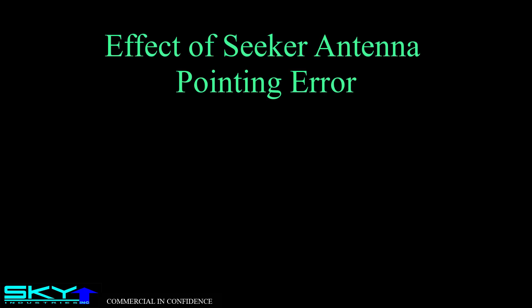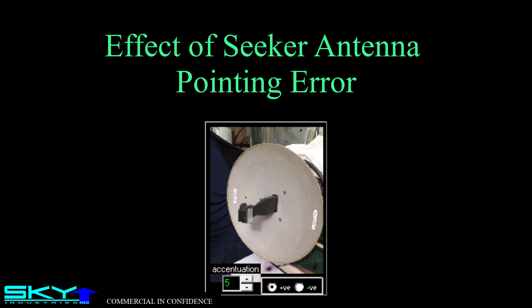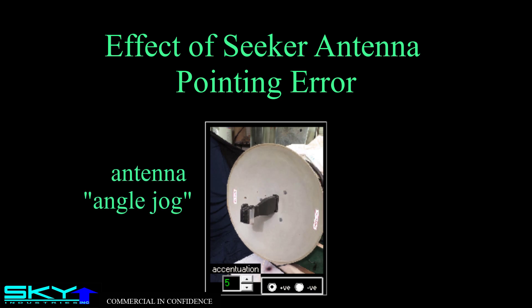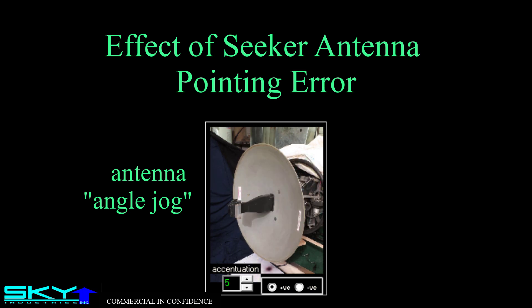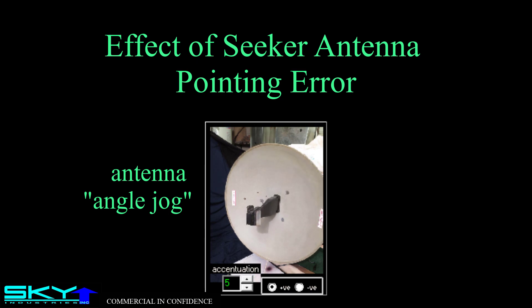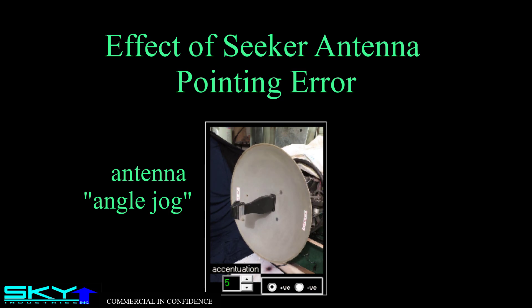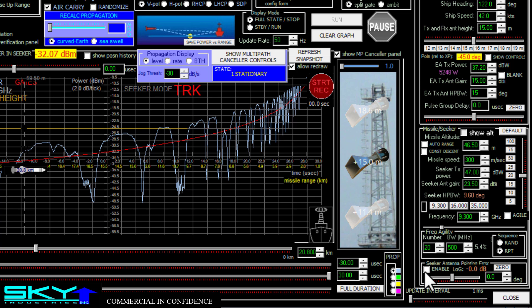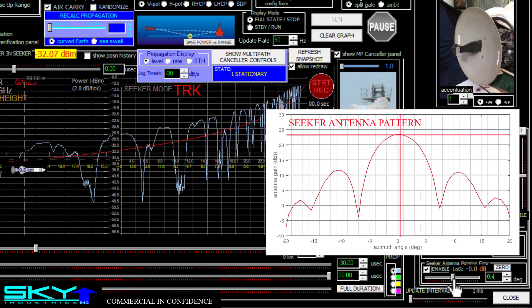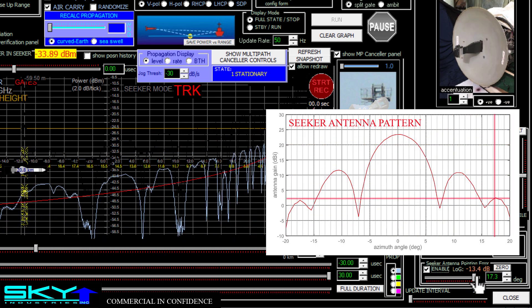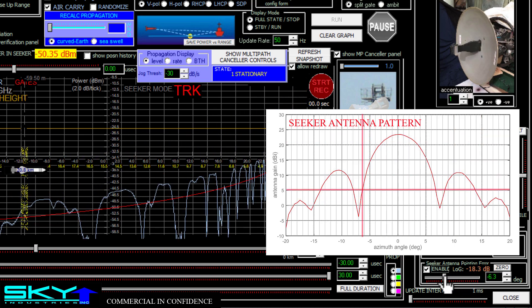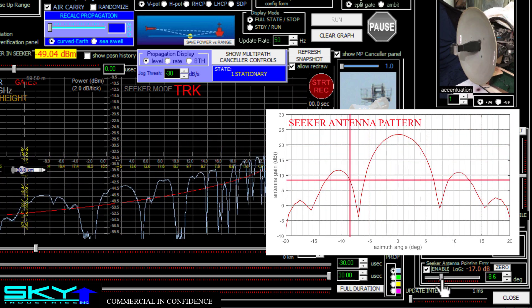Let's look at the effect of a seeker antenna pointing error — also called an angle jog. What does that do to the multipath canceler? When the seeker antenna points away from the ship, that causes the signal to fade, which in a way could look like multipath. So how does the canceler handle that? To check this, let's run a simulation of a flying missile and manually insert seeker antenna jogs during the flight so we can see how the canceler reacts to signal fades caused by the seeker antenna in addition to fades caused by multipath.